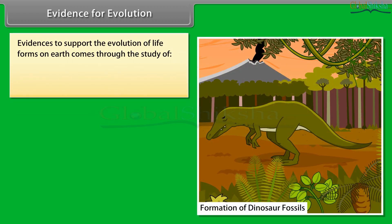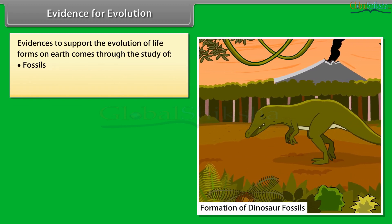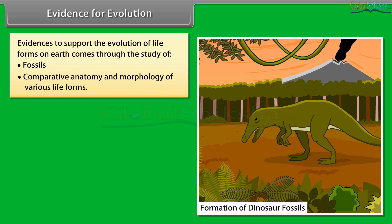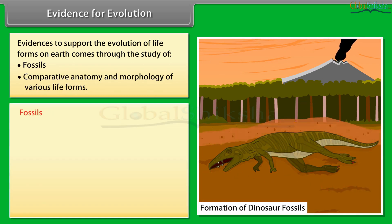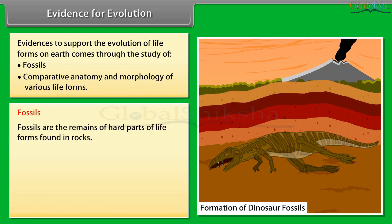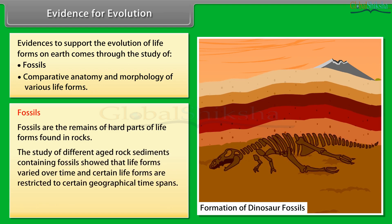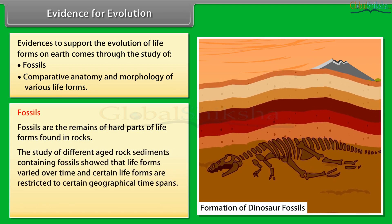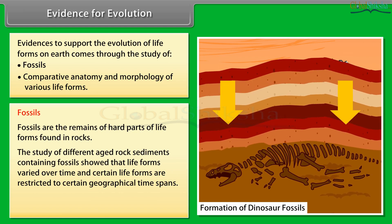Evidence for evolution comes through the study of fossils and comparative anatomy and morphology of various life forms. Fossils are the remains of hard parts of life forms found in rocks. The study of different aged rock sediments containing fossils showed that life forms varied over time and certain life forms are restricted to certain geographical time spans. Such evidence is referred to as paleontological evidence.